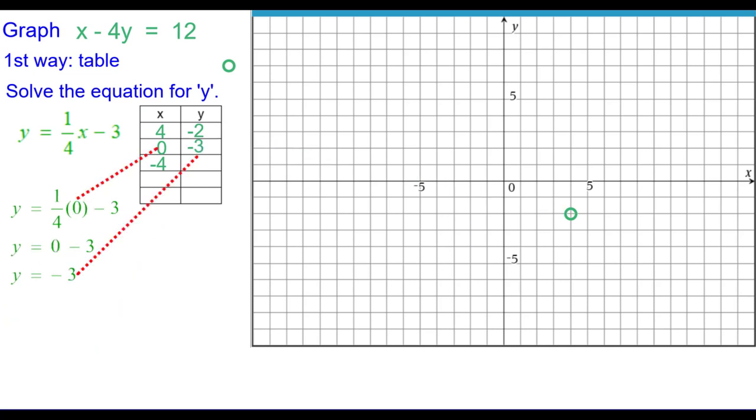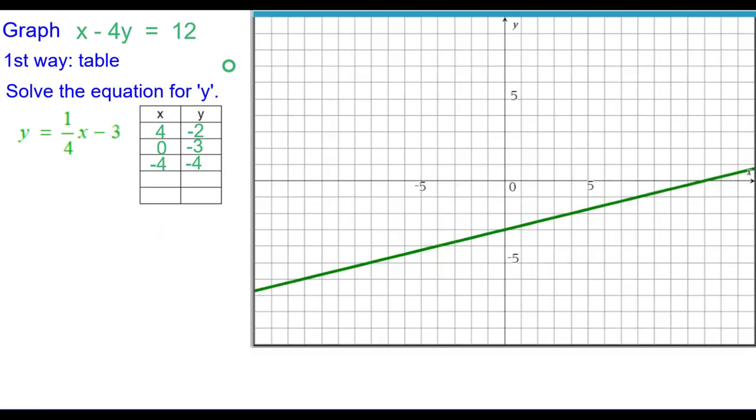When x is 0, we found that y was negative 3, so we plot that point. And when x is negative 4, y also turned out to be negative 4, and we plot that point. And you can see they are collinear, which is good. So three points here make that line. Connect the points. And there's our graph.